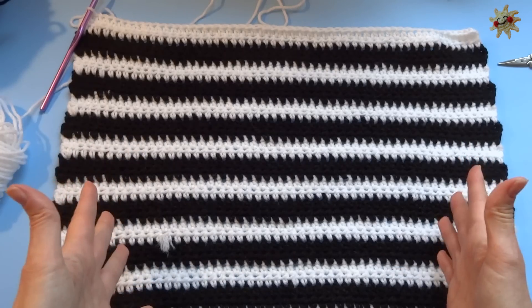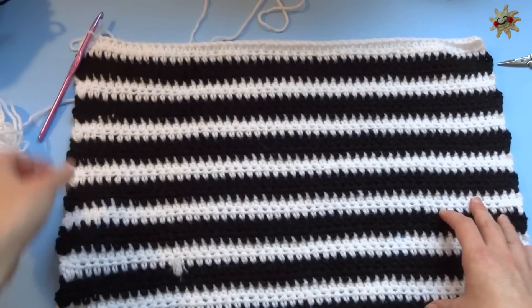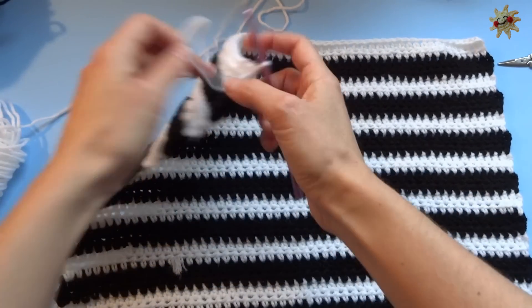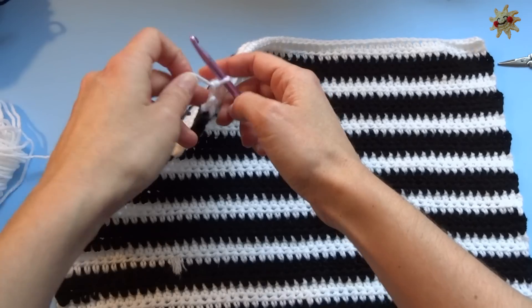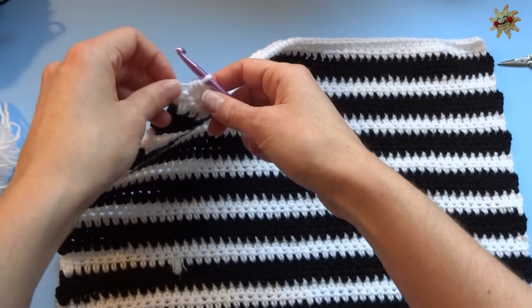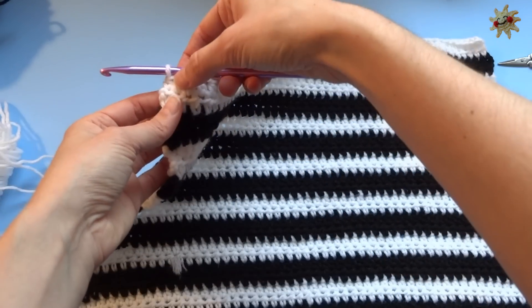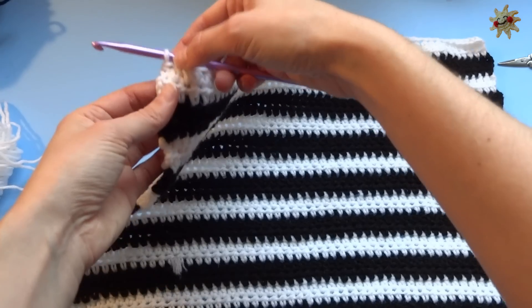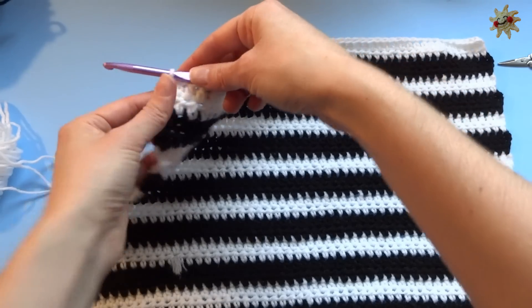Now in order to sew it together, you're not going to cut your string from your last row. So I left mine hanging. Now, if you did, don't worry about it. You can just reattach it with a slip stitch. But I didn't cut mine because I'm going to go right from my last half double crochet in my last stitch to slip stitching the whole thing together.